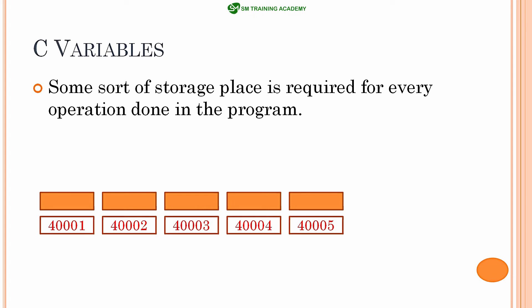Let's assume that I am having 5 different memory locations in my CPU or in my microcontroller, starting from 4001 to 4005. Remember that these memory locations are represented in hexadecimal or in binary. If I write 0x4001, it means the memory locations are represented in hexadecimal. I am just neglecting the 0x for better understanding.